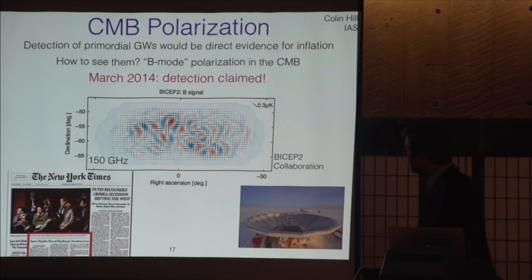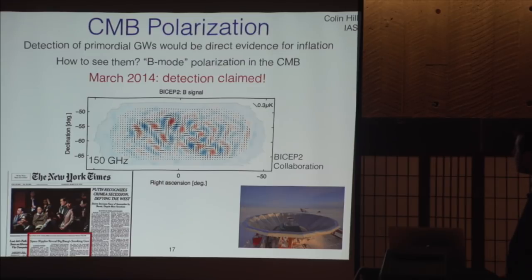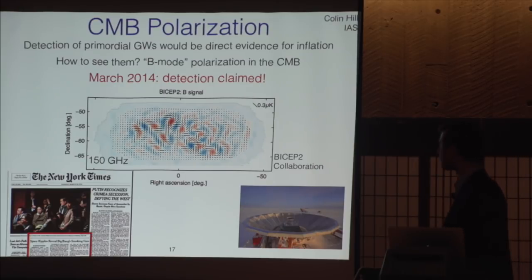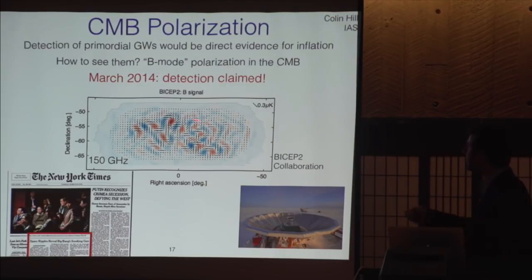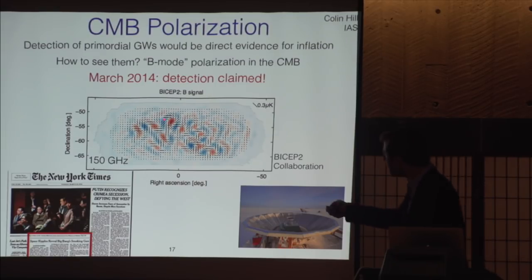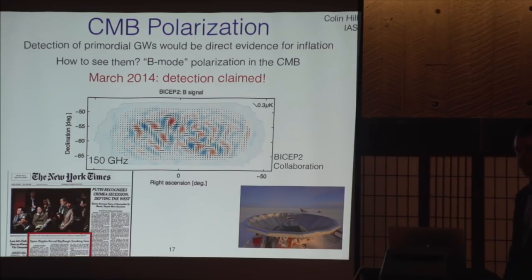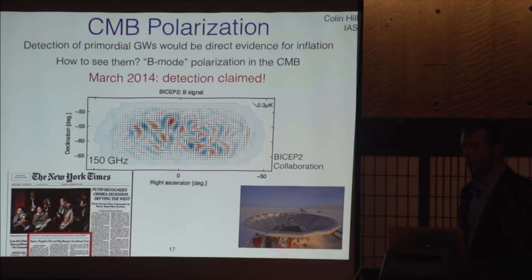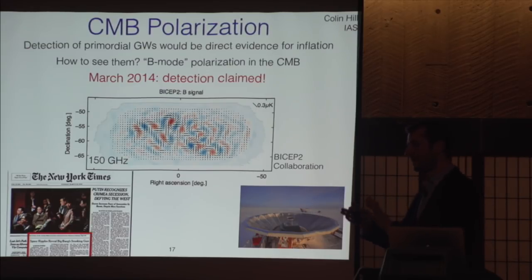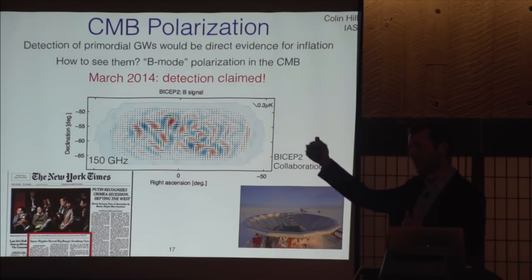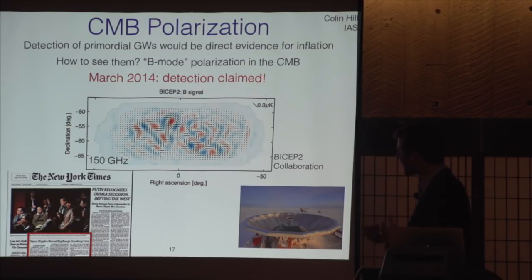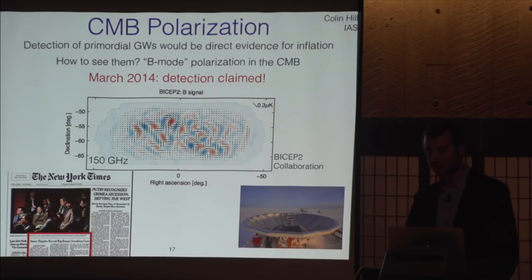However, there was a claim of a detection in March of 2014 — this was a huge deal, on the front page of the New York Times, setting off a huge wave of activity in cosmology and fundamental physics. The detection was claimed by an experiment called BICEP2 at the South Pole. They presented a map of B-modes where you could see the swirly pattern by eye. But crucially, this was observed at only one single frequency. When we look out into the universe, we have to look through our galaxy and other foreground signals that we know must be removed.